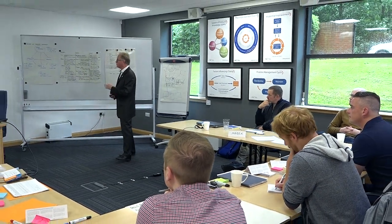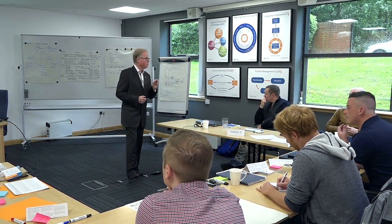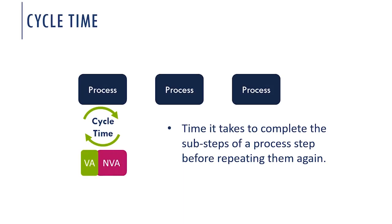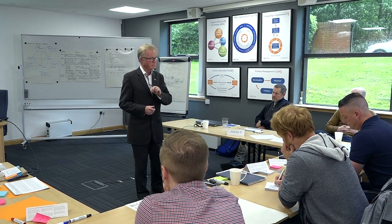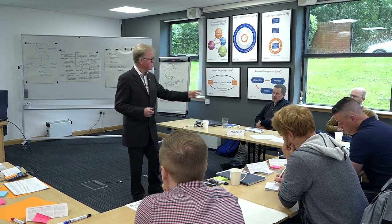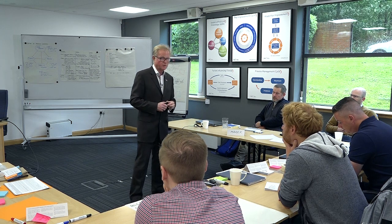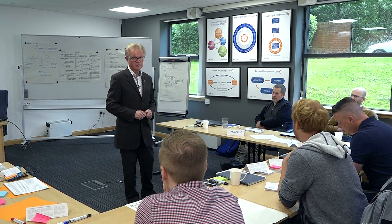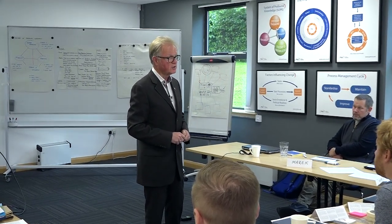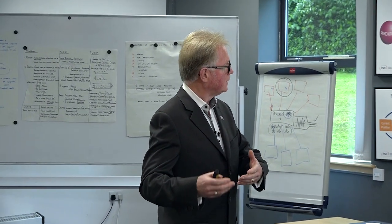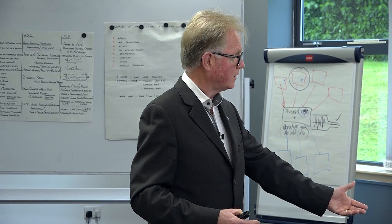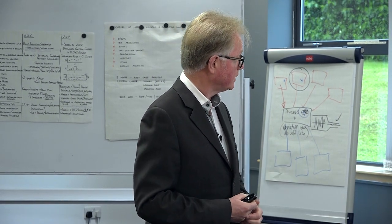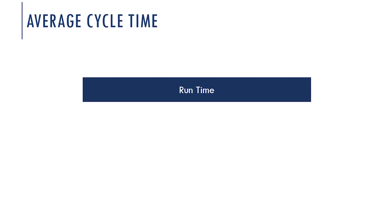Cycle time is the time it takes to complete the sub-steps of a process step before repeating them again. They will be constructed of some activity which is value-adding — it truly adds value to the product — and some which is non-value-added. When we map the process, we look for the value-added and non-value-added. In offices, the value-adding aspects can be as low as 2% or 3%. Most of the other activity is moving things around, not adding value. In workshops it tends to be about 25–30%, since moving a piece of material from one station to another is not value-adding.